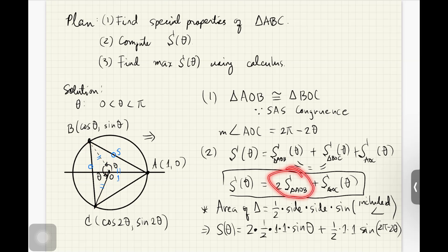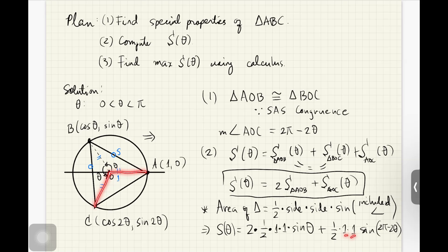This is very convenient since we know both sides and the included angle. For triangle AOB, both sides are 1 (unit circle), and the included angle is theta, so area of AOB = (1/2)(1)(1)sin(theta). For triangle AOC, both sides are also 1, and the included angle is 2 pi minus 2 theta, so area of AOC = (1/2)(1)(1)sin(2 pi minus 2 theta).